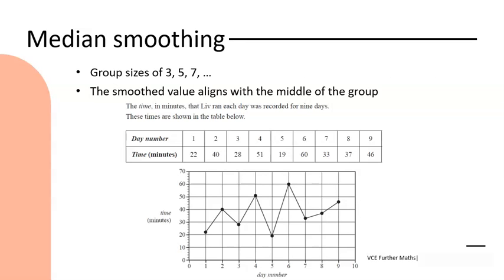Median smoothing is where we are taking groups of data points - usually groups of three, five, or even seven, always odd-numbered groups - and we are finding the middle of that group. That means we are finding the median working across the horizontal axis (the EV) and we're finding the middle working up or down the vertical axis (the RV).